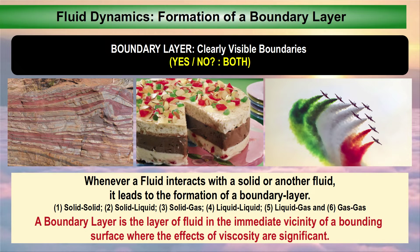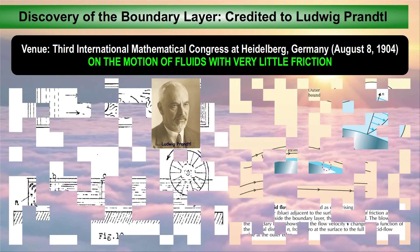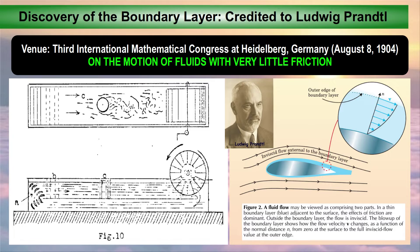This takes us to the scientific basis for the discovery of the boundary layer. The credit should go to the German scientist Ludwig Prandtl, who for the first time on August 8, 1904, gave a 10-minute speech at the 3rd International Mathematical Congress at Heidelberg, Germany. He showed, through an age-old experiment using a wheel and fluid, that when a solid surface is interacting with the fluid, exactly at the point where the surface interacts, the fluid velocity becomes zero. And as you go away from the surface, the fluid velocity gradually increases. He said there should be one layer where the fluid velocity gradually decreases as you approach the surface — and that was the discovery of the boundary layer.